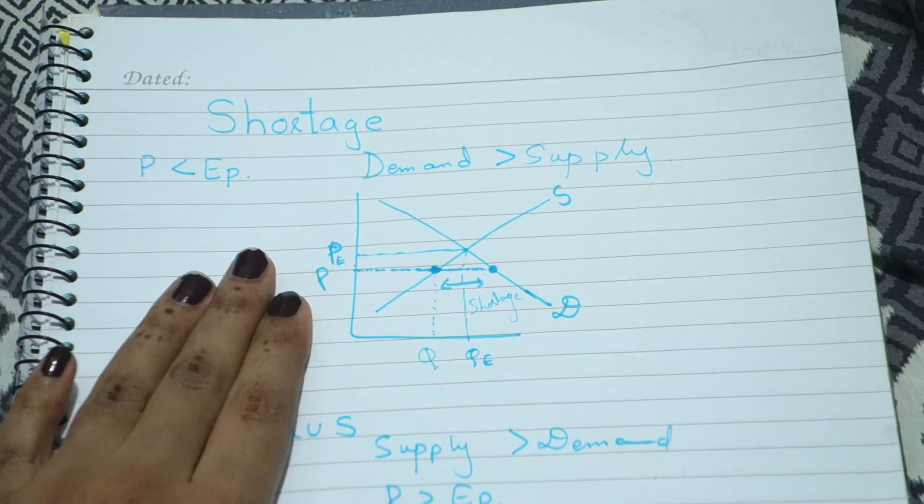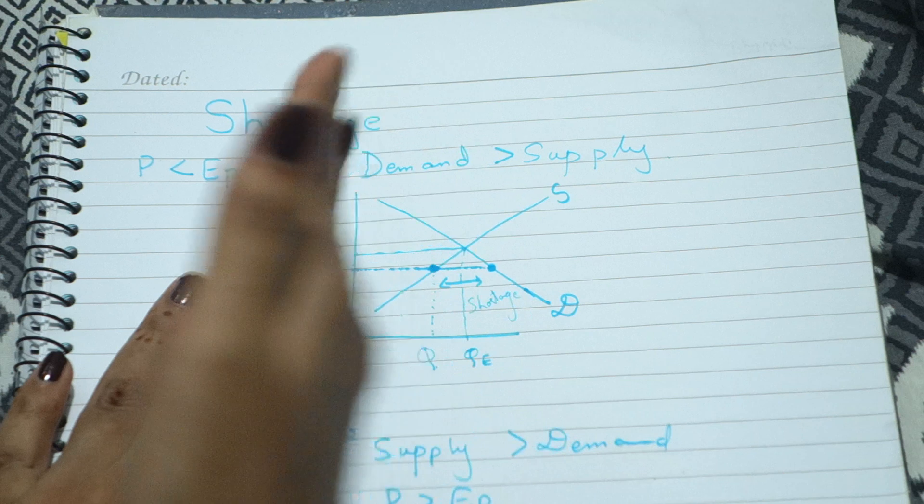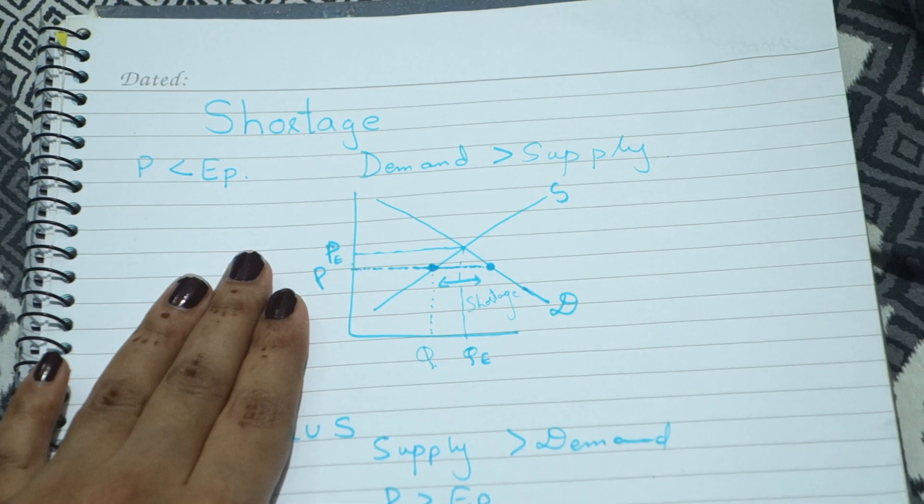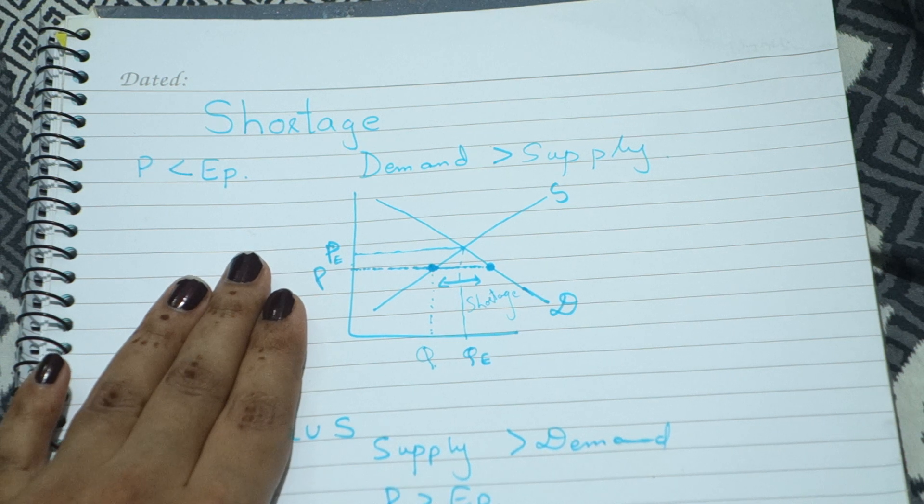Graph me is ko is tarike se represent karenge. Agar kabhi situation aati hai ki is price se is price pe aapki jo market price hai wo aagayi, aur demand aur supply hai ye hai.